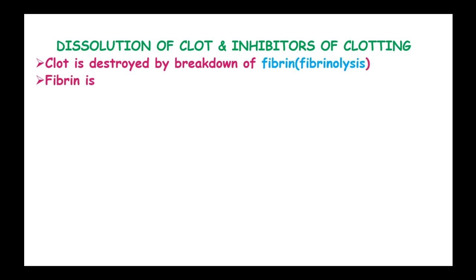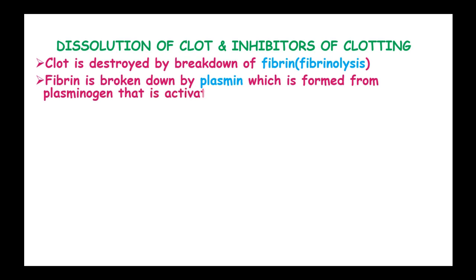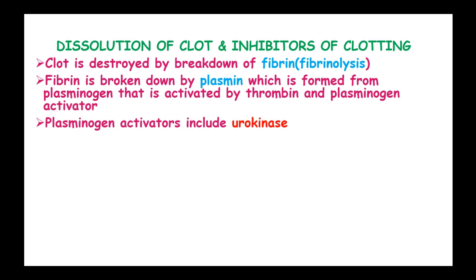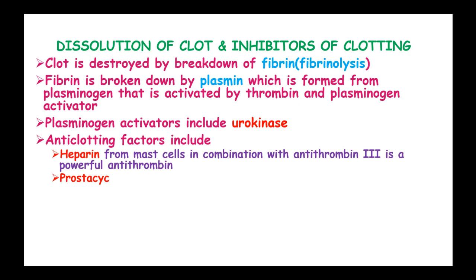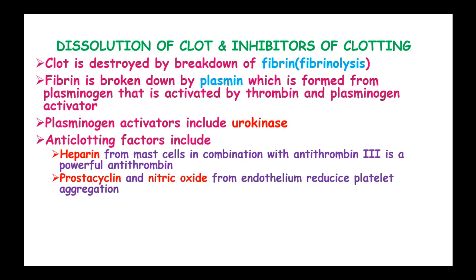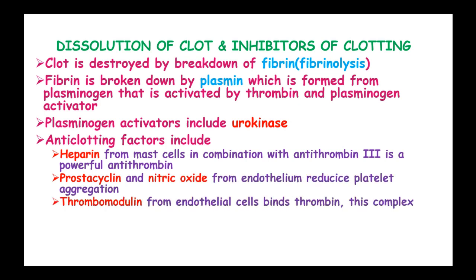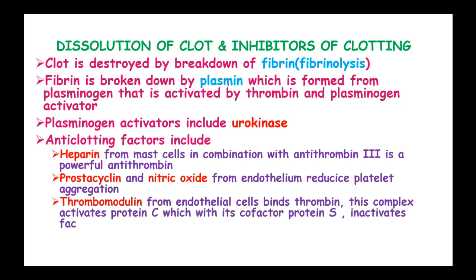Regarding the dissolution of a clot and inhibitors of clotting: a clot is destroyed by the breakdown of fibrin through fibrinolysis. Fibrin is broken down by plasmin, which is formed from plasminogen that is activated by thrombin and plasminogen activator. Plasminogen activators include urokinase. Anti-clotting factors include heparin, which is formed by mast cells in combination with antithrombin-3, a powerful antithrombin. Prostacycline and nitric oxide are released from the endothelium. Thrombomodulin from endothelial cells binds thrombin, and this complex activates protein C, which acts as a cofactor with protein S and inactivates factor V.